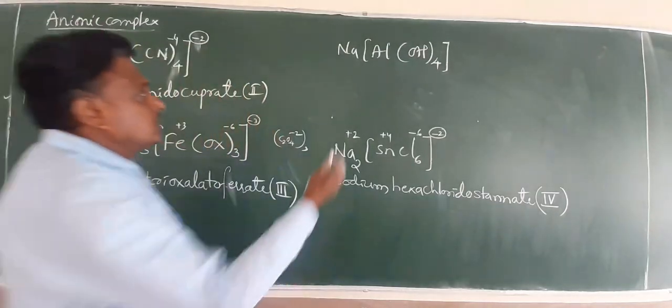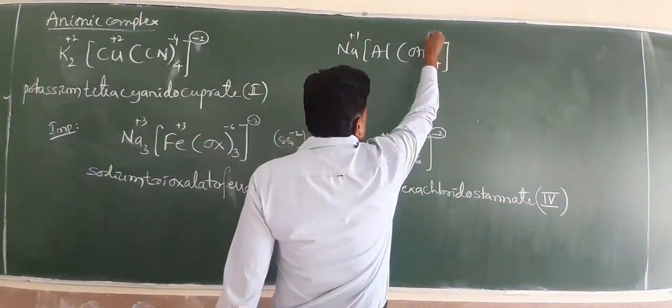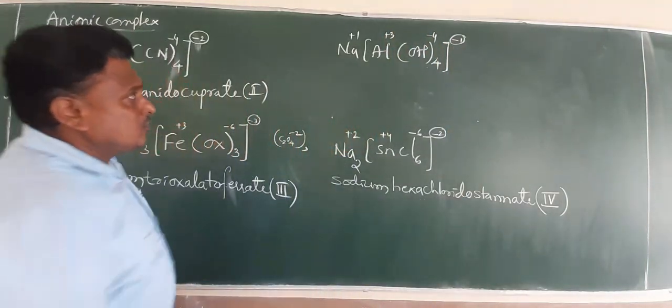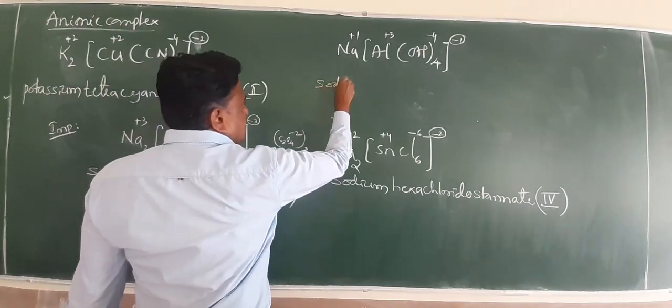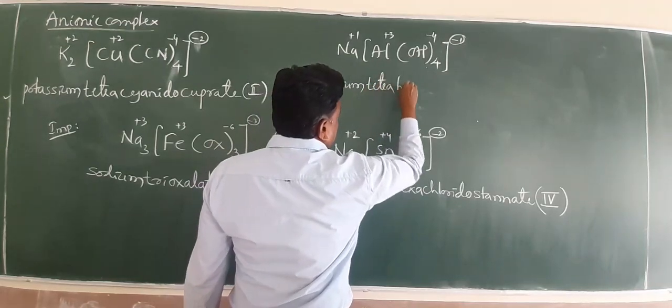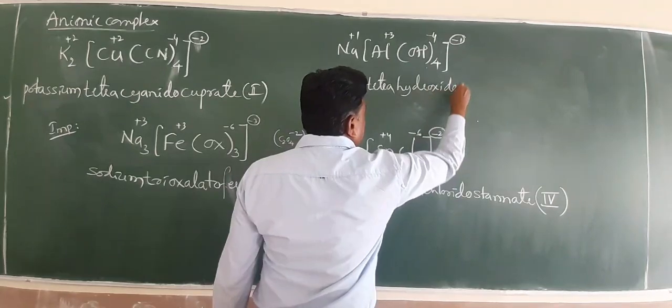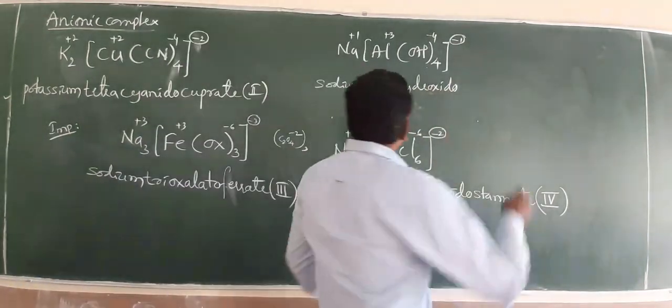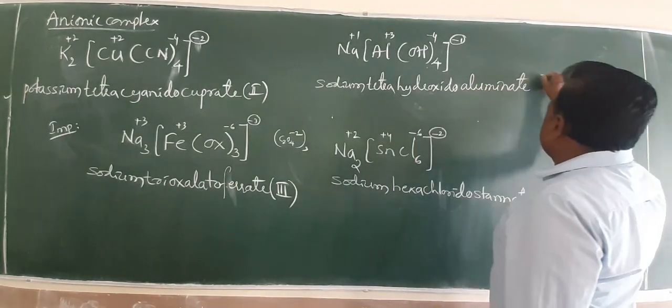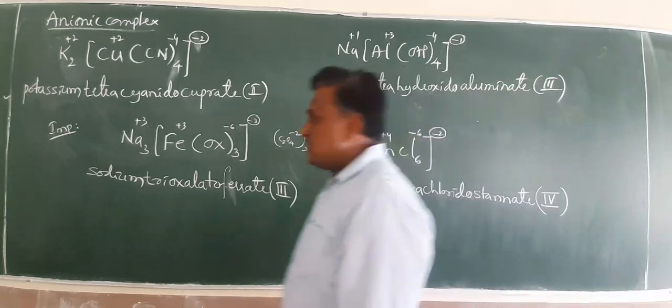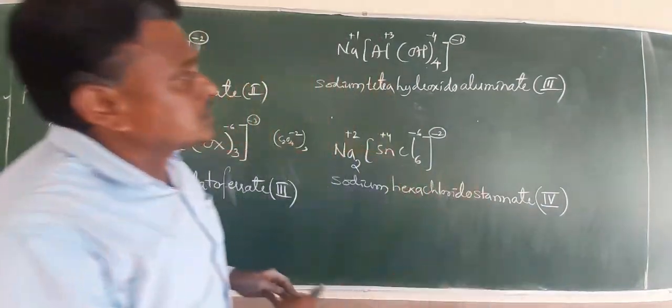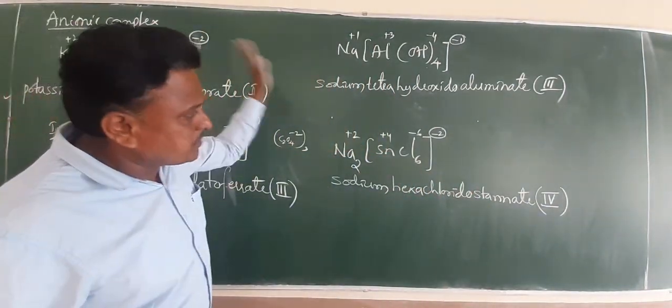These are examples. Practice because in one example with a different ligand I can mention here Na Al hydroxido. Sodium is plus 1, minus 4. Automatically plus 3 charges.